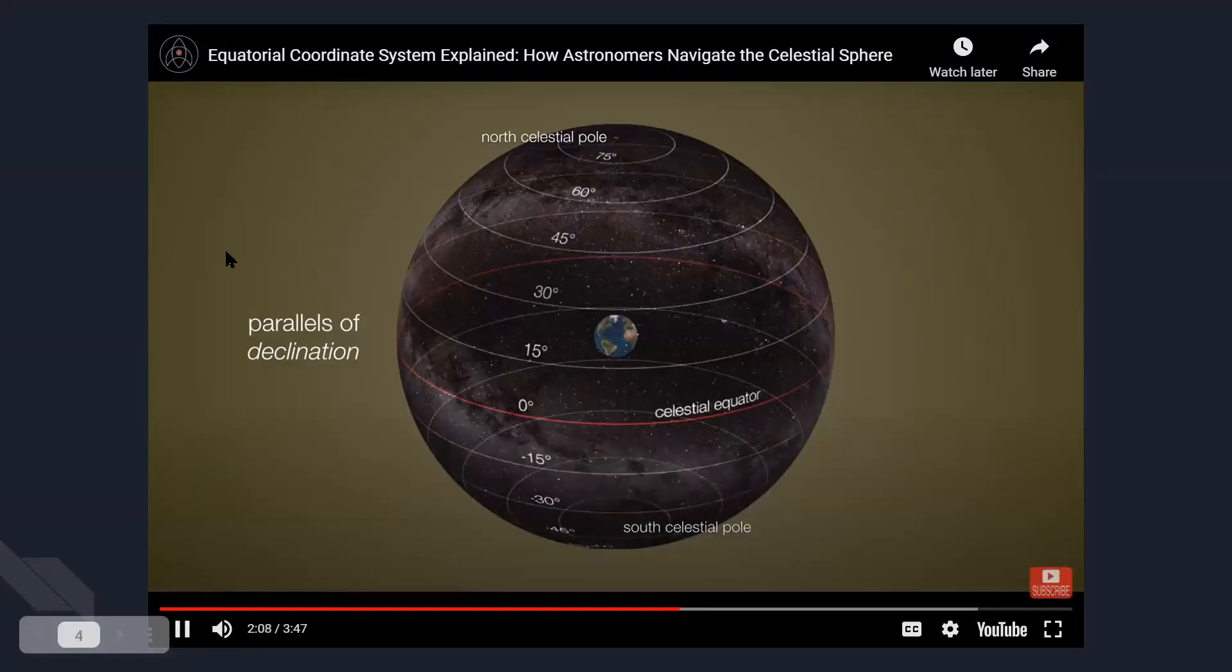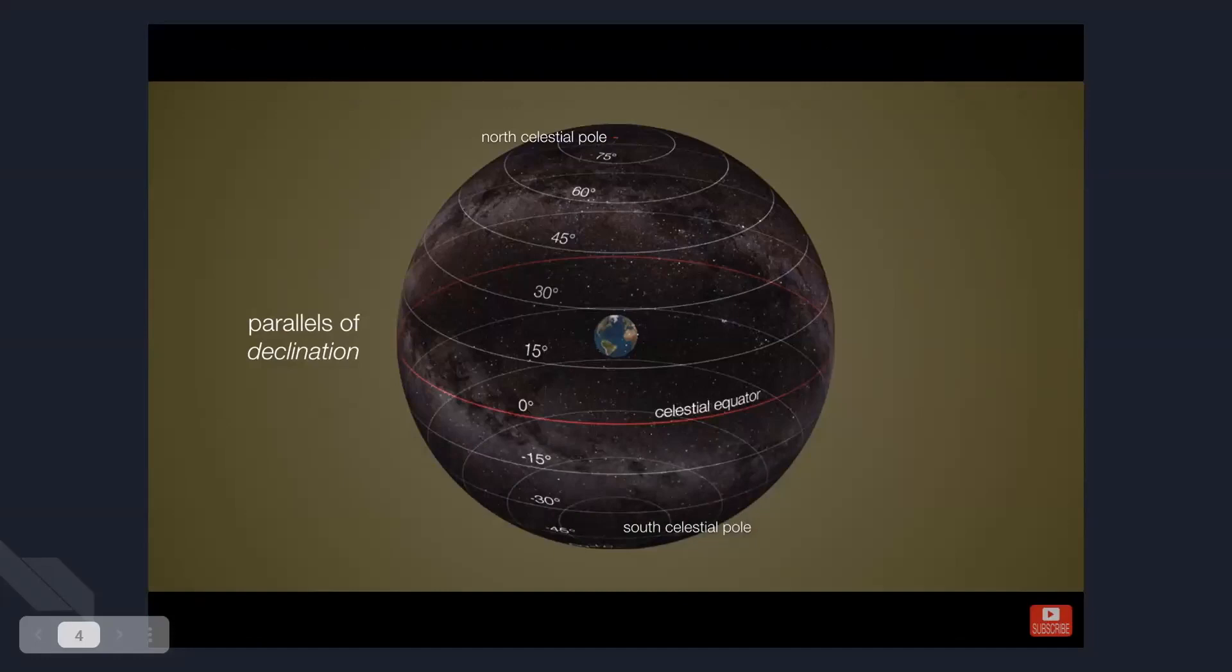Now, we cannot simply take our meridians and apply those to the sky as well. The reason for that is because the Earth is rotating and therefore the meridians would need to rotate as well. And that would make such a system fairly useless to us. Instead, what we'll do is we'll take the annual path of the sun, the ecliptic, and we'll note the location that the sun is on in March when it arrives at the vernal equinox.